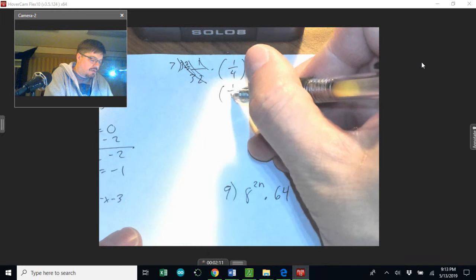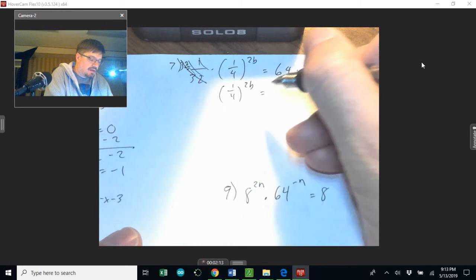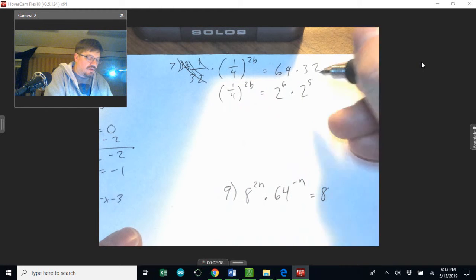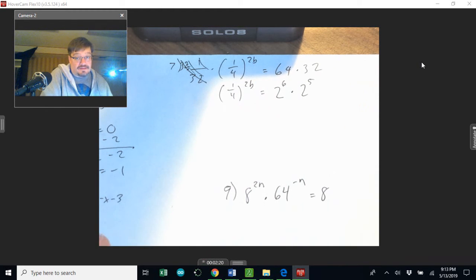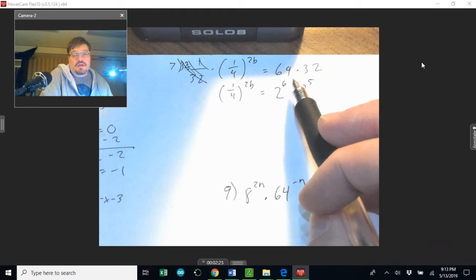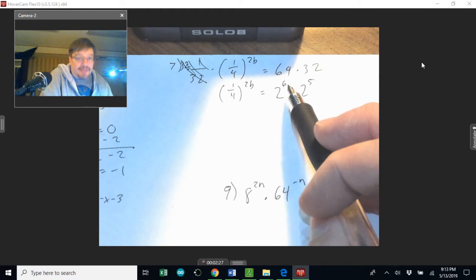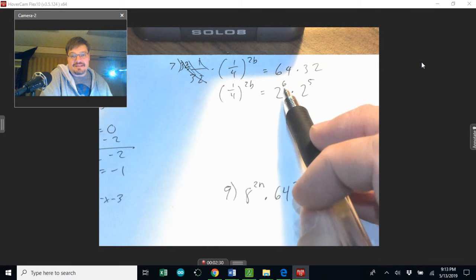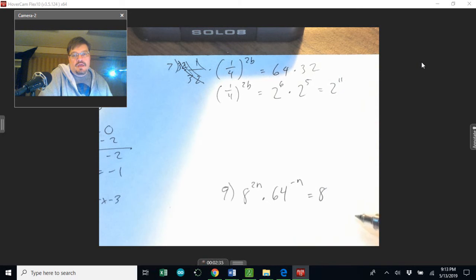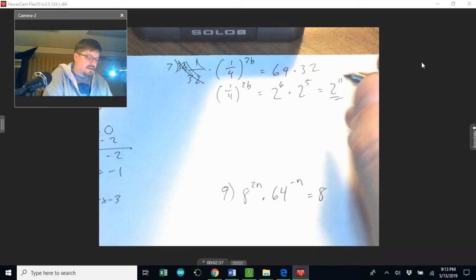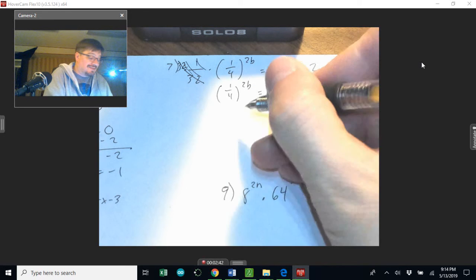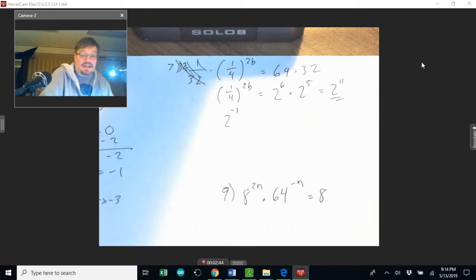That leaves me with 1 over 4 to the 2b equals 2 to the 6th power times 2 to the 5th power. Now I do this because of a special reason—these are both powers of 2. So now I can clearly see that if this is 2 to the 6th times something that's 2 to the 5th, I really have 2 to the 11th power. This is going to be important because 1 over 4 can be expressed in terms of a base 2.